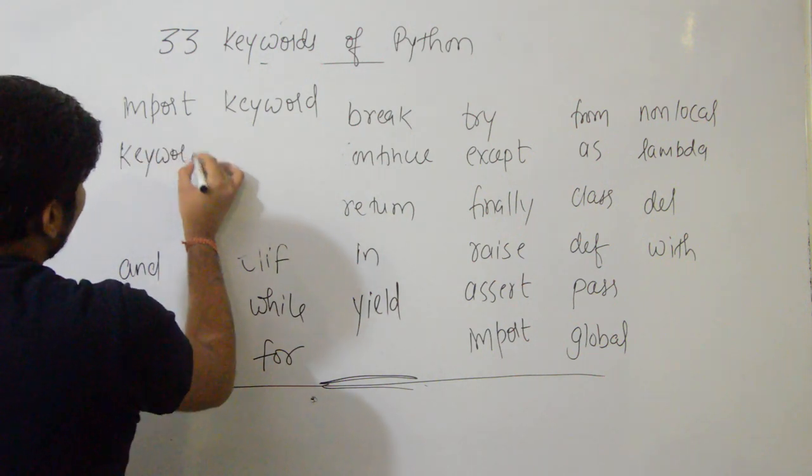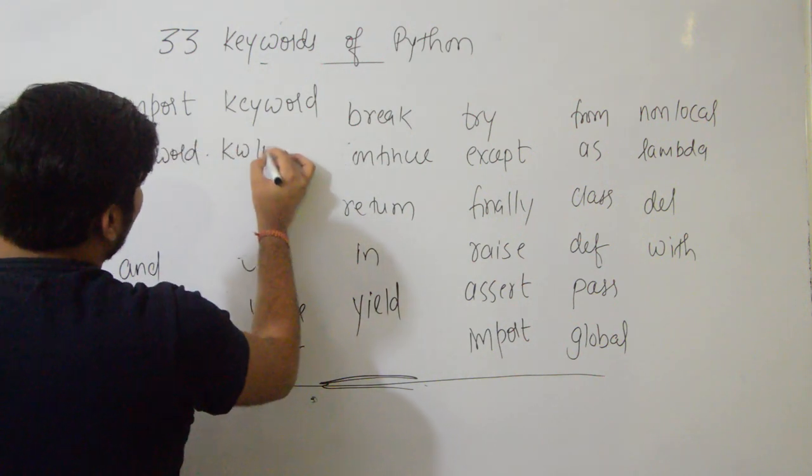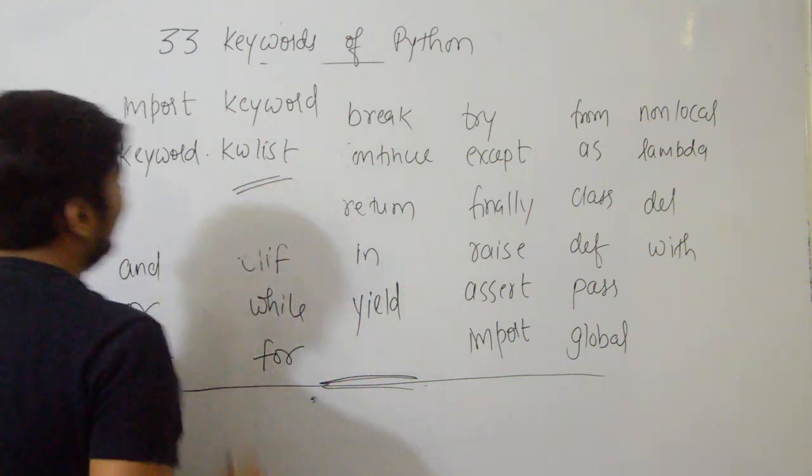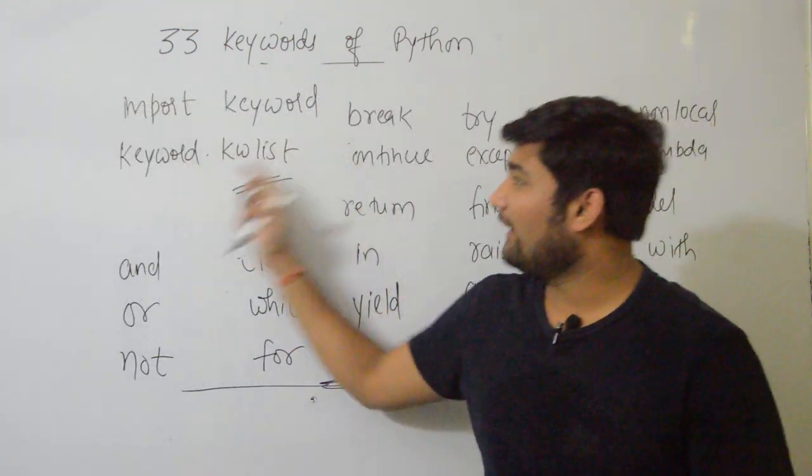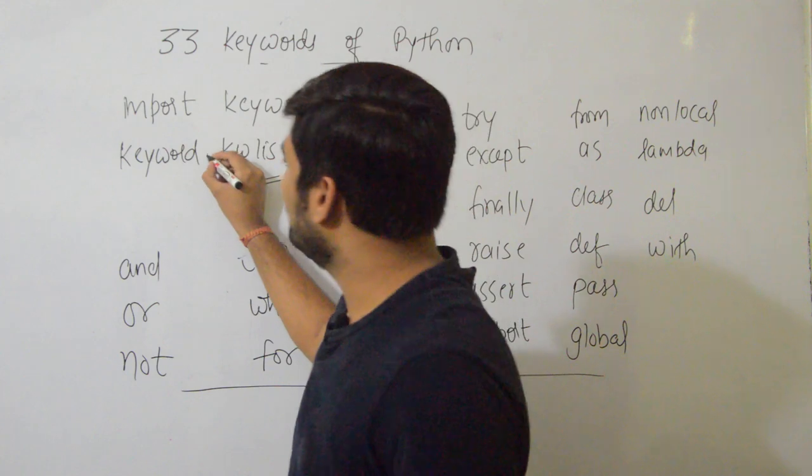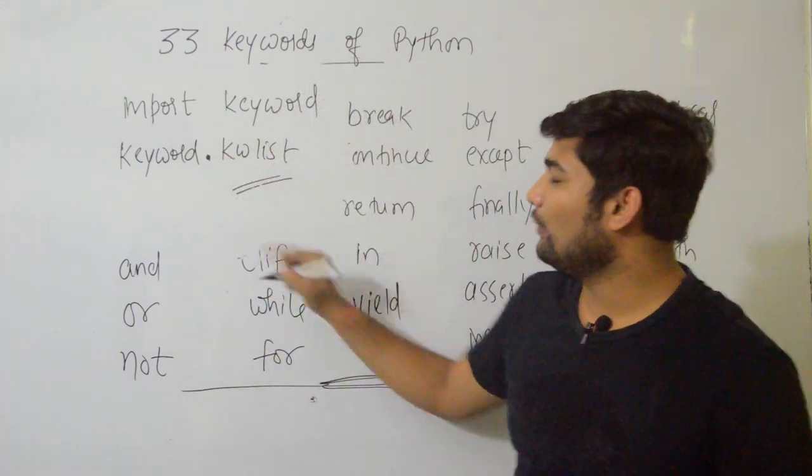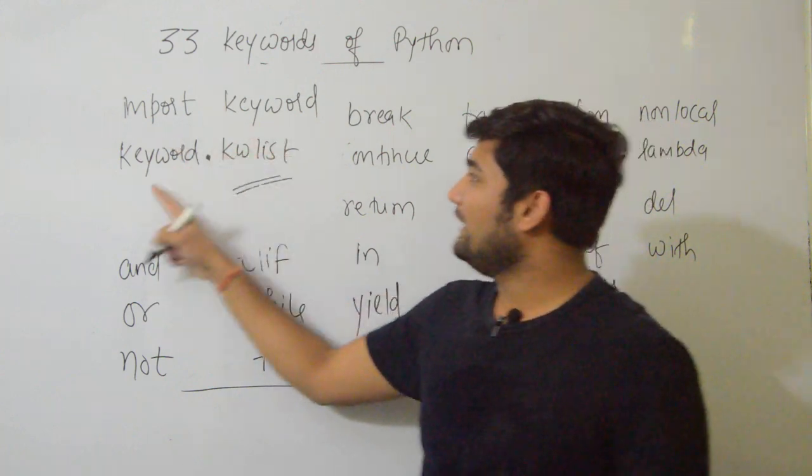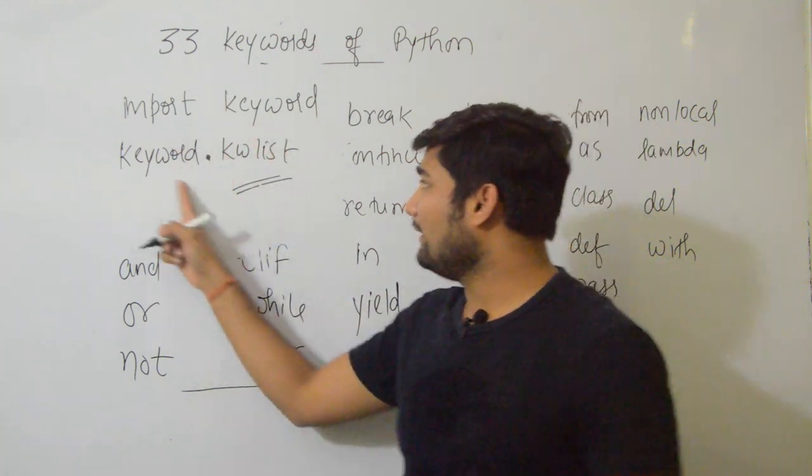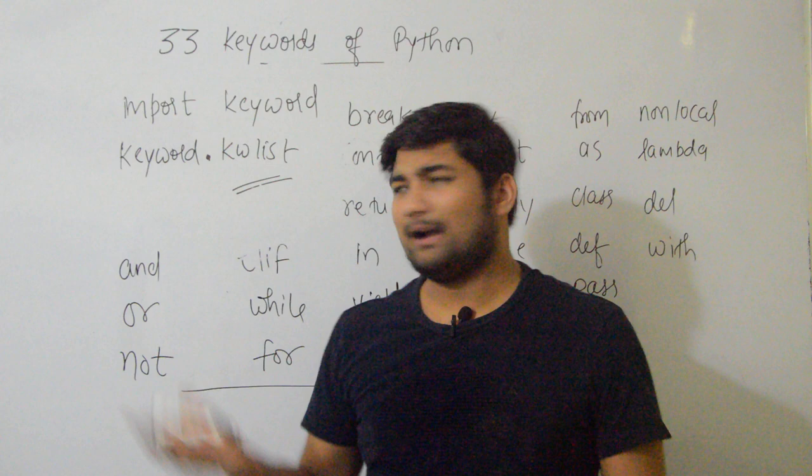I will tell you how to see these keywords programmatically. You will type: import keyword, then keyword.kwlist. In order to see it, import keyword, then keyword.kwlist. Open command prompt.